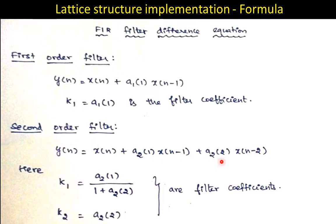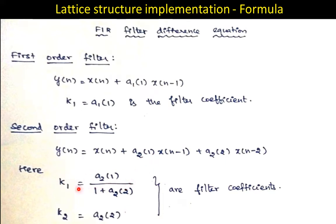Since this is a second order filter, you will have two terms in your past input: x(n-1) and x(n-2). The filter coefficient associated with x(n-2) is directly assigned to k2, so k2 equals a2(2). But k1 is not directly equal to a2(1); the formula is k1 equals a2(1) divided by 1 plus a2(2).